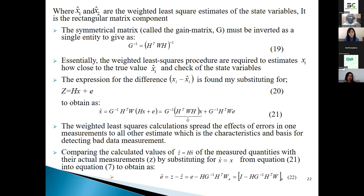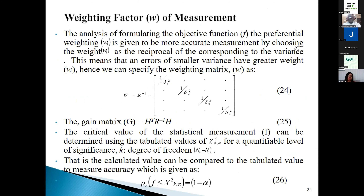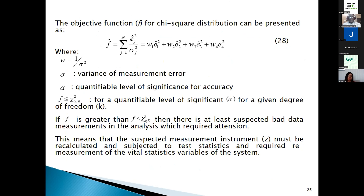The weighting factor equations are established for the measurement parameters, which have to do with the diagonal matrices element as delta-1-squared up to delta-4-squared. These are a continuation of the sum of squared errors up to equation 27. In equation 28, we have the variance of measurement error. We want to ascertain what is the deviation from the true value to the estimated value, and establish a level of significance for accuracy using the chi-square distribution for a quantifiable level of significance for a given degree of freedom F.